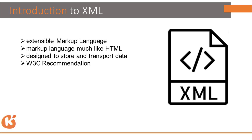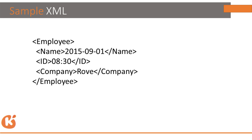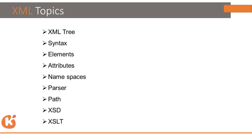In the first session we will learn about XML and JSON language. This is a demo of XML: here we have a root node, and within the root node we have fields like name, ID, and company. In XML we cover different topics like XML tree, syntax, elements, and attributes.